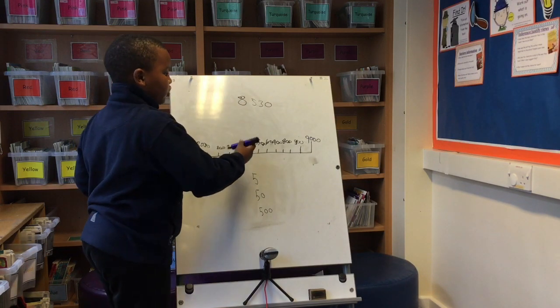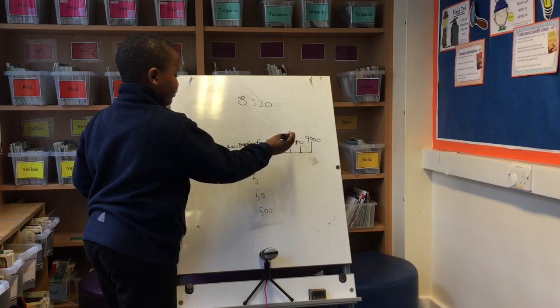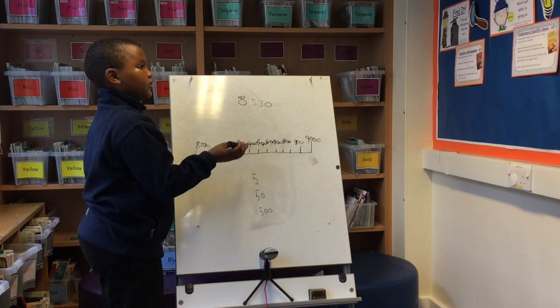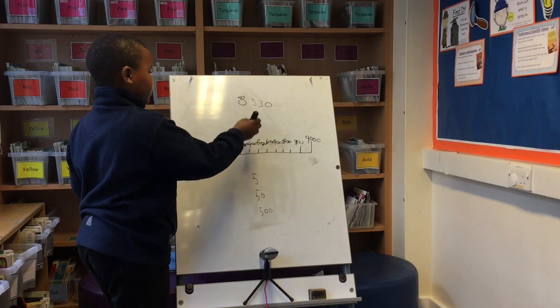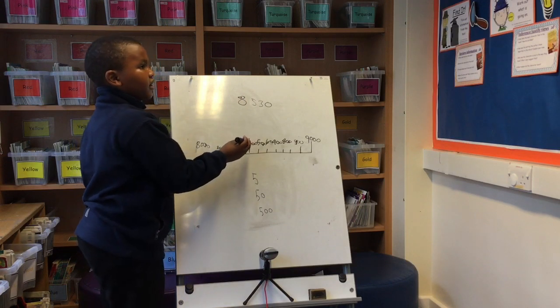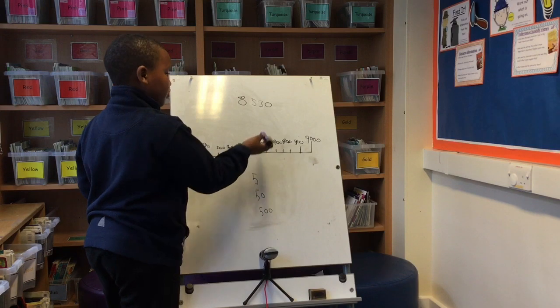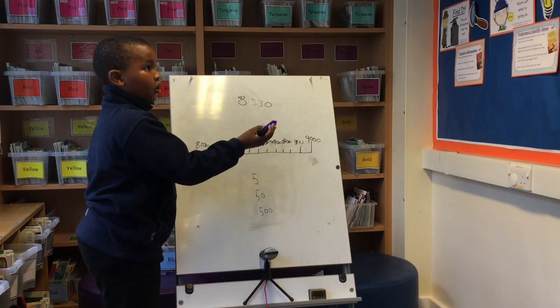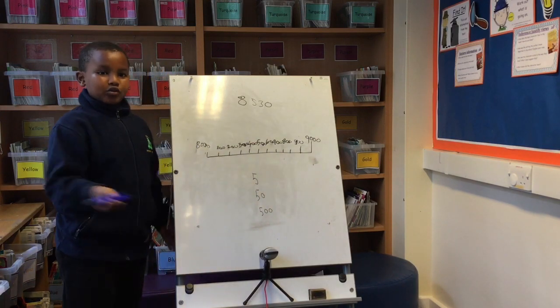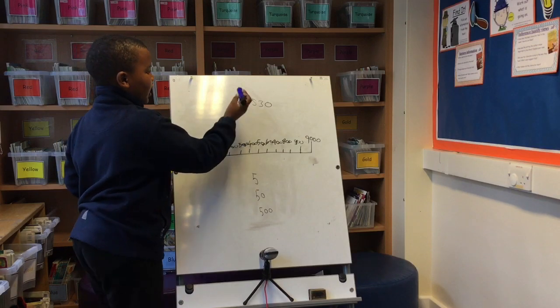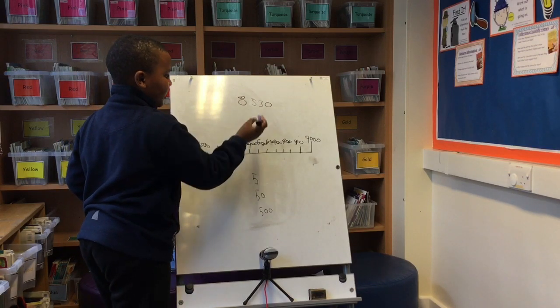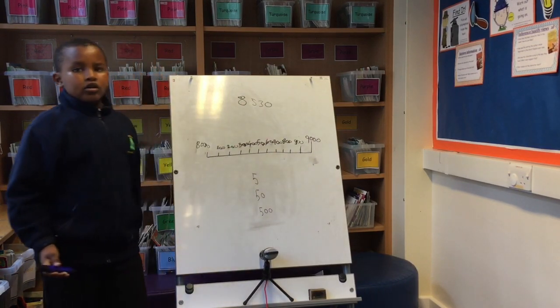8530 would round up to 9000 because the number goes up to 5. So that's why 8530 rounds up to 9000.